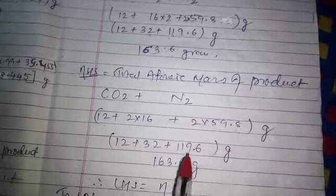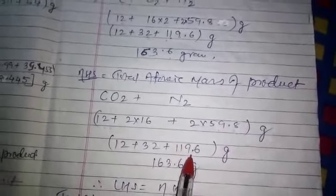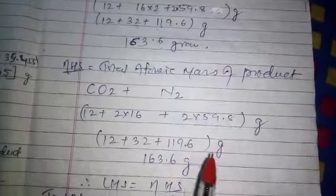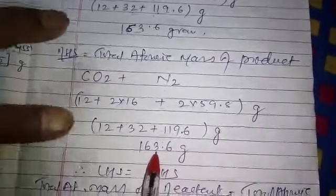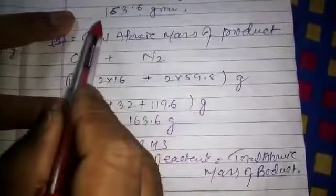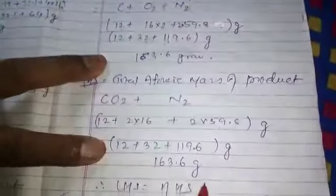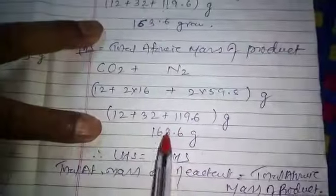Nitrogen is 59.8, and multiply by 2, that comes to 119.6. Add these three, 163. This is simple simplification.